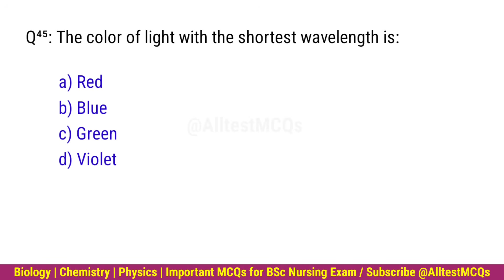Q45. The color of light with the shortest wavelength is? Right option is D. Violet.